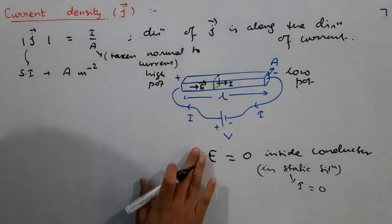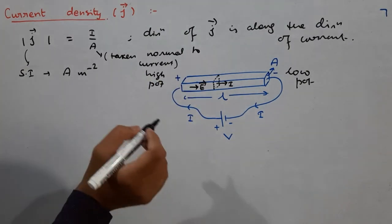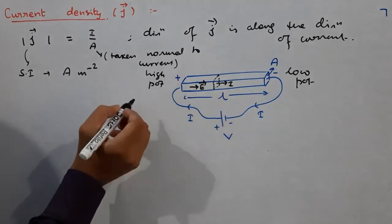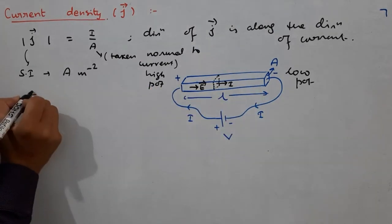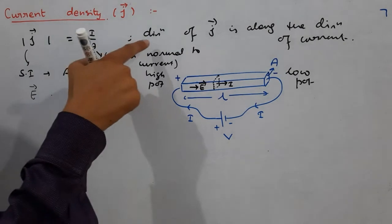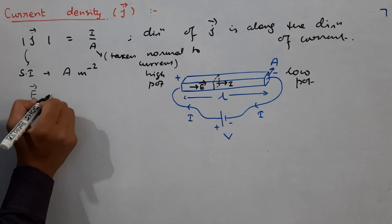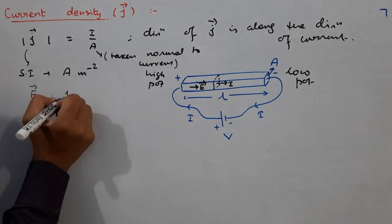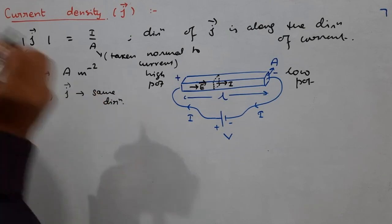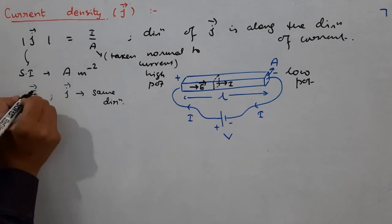This is not a static condition, so there is some electric field inside the conductor. The direction of electric field is from higher potential to lower potential, which is along the direction of current. Current density J also has its direction along the direction of current. So E vector and J vector both point in the same direction — current density is always in the same direction as the electric field.